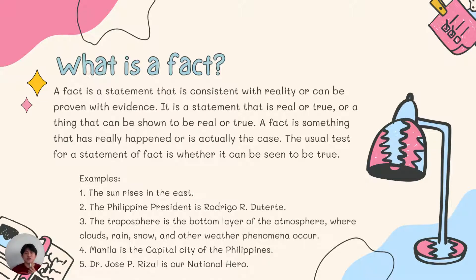Amazing! Can't believe that you guys have an idea already, but let's widen your thoughts and understanding on this matter. What is a fact? A fact is a statement that is consistent with reality or can be proven with evidence. It is a statement that is real or true, or a thing that can be shown to be real or true. A fact is something that has really happened or is actually the case. The usual test for a statement of fact is whether it can be seen as true. Our cue here is: real, true, and can be proven with evidence.